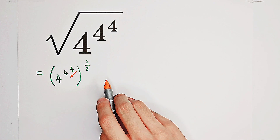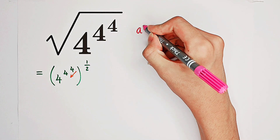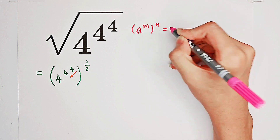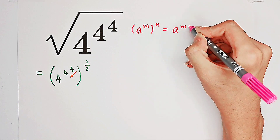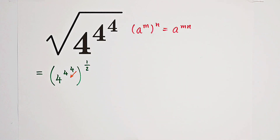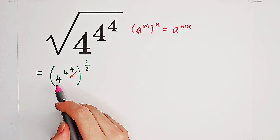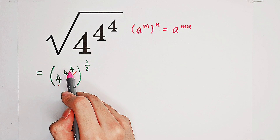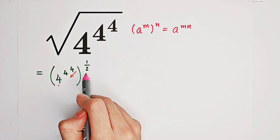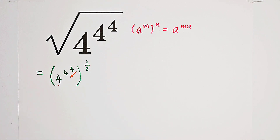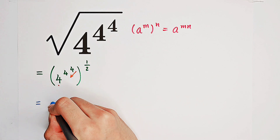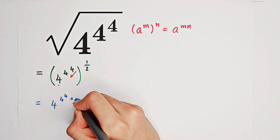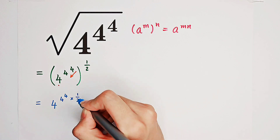Now we have a formula: a to the power of m, all to the power of n, is equal to a to the power of m times n. So here, a is 4, m is 4 to the power of 4 as the exponent, and n is the exponent of the entire thing. So it becomes 4 to the power of — 4 to the power of 4, times 1 over 2.